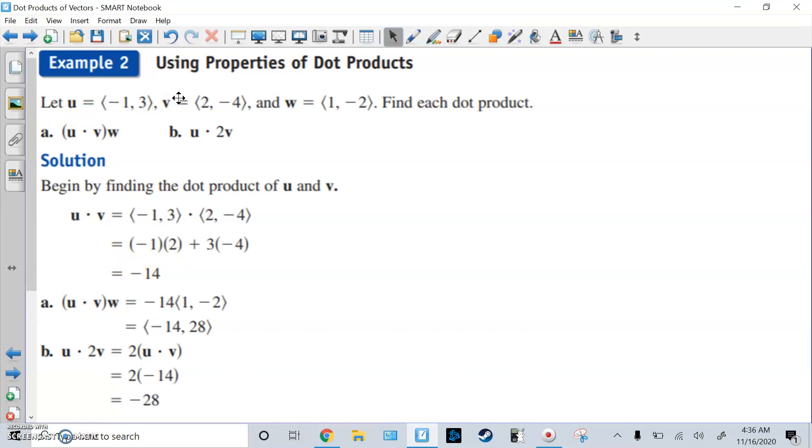Alright, two vectors will probably make a scalar. And then a scalar times a vector is still a vector. Alright, this one U times 2V. So you can do the 2 later or first, doesn't matter. But you do the dot product from 4, negative 14, times like 2 is negative 28.